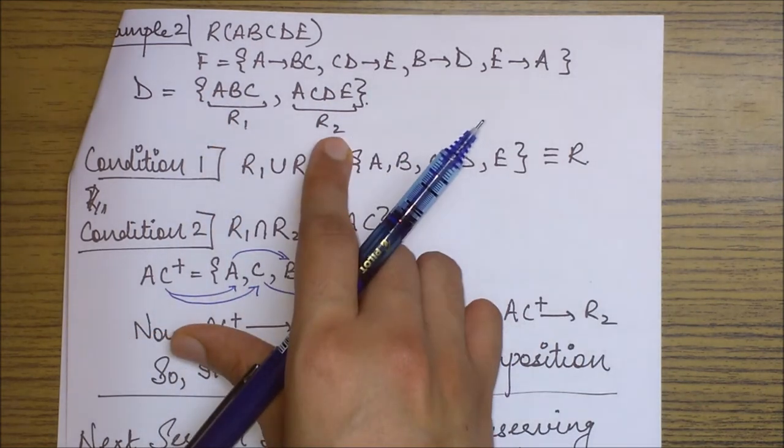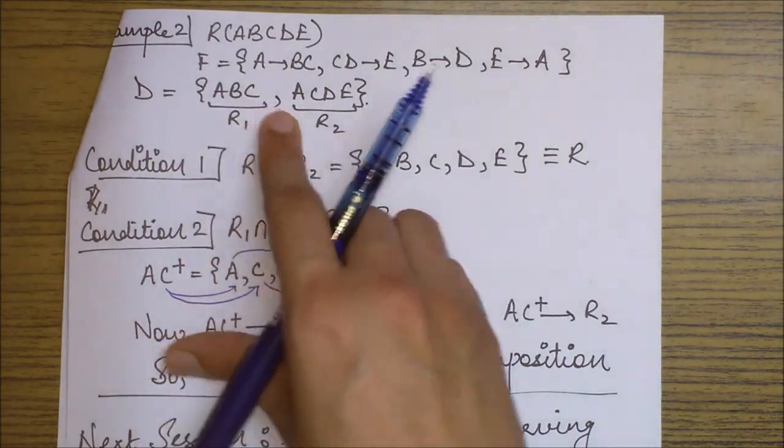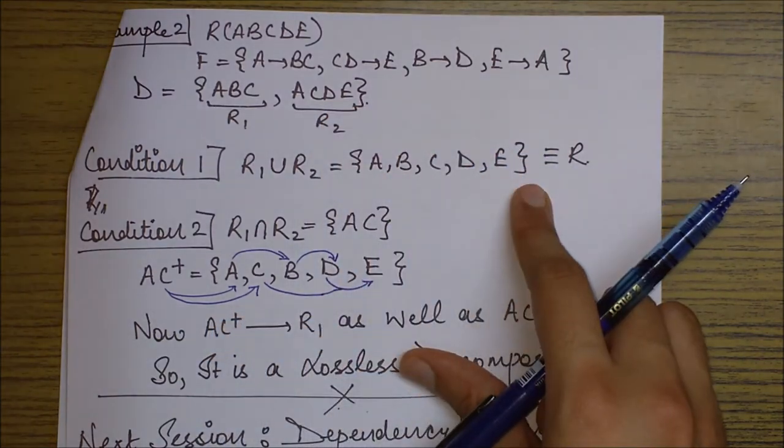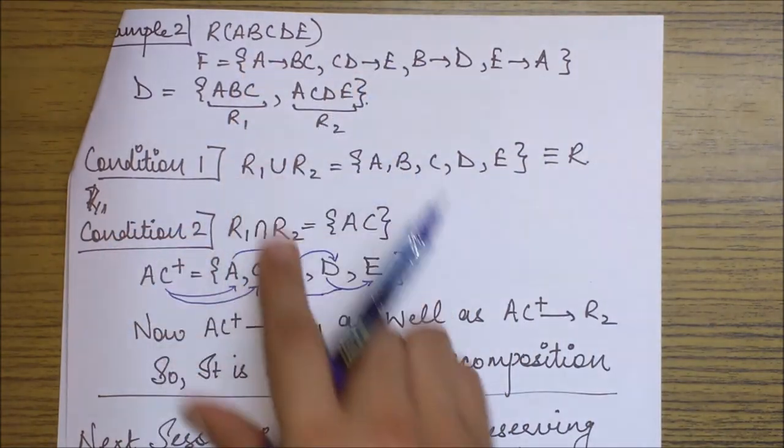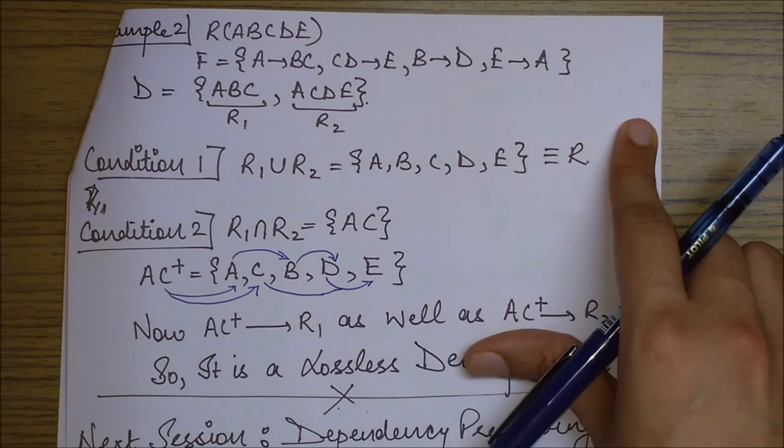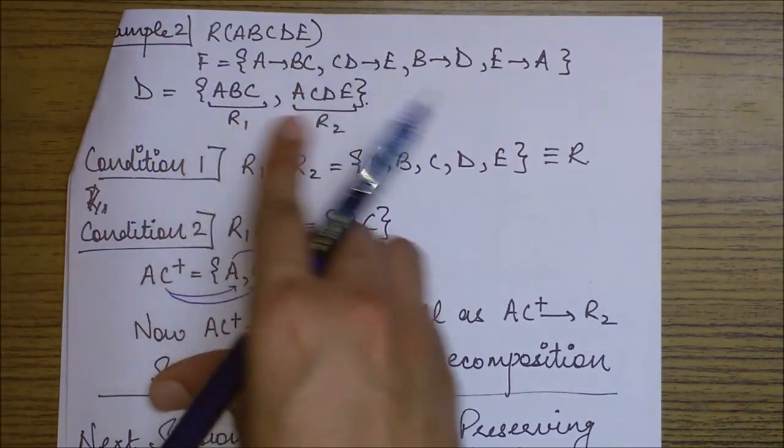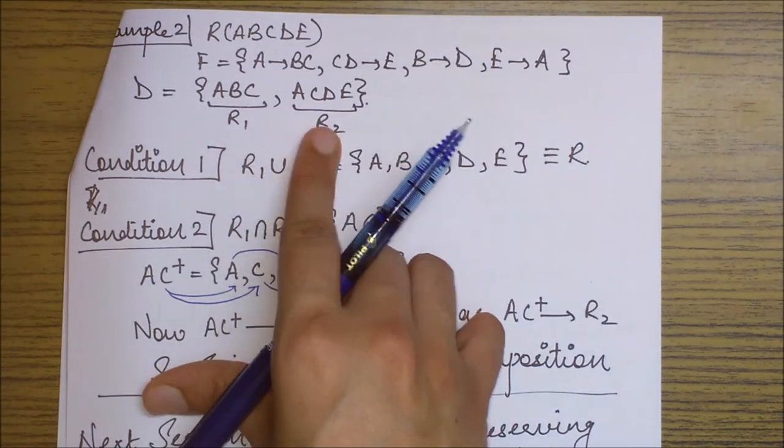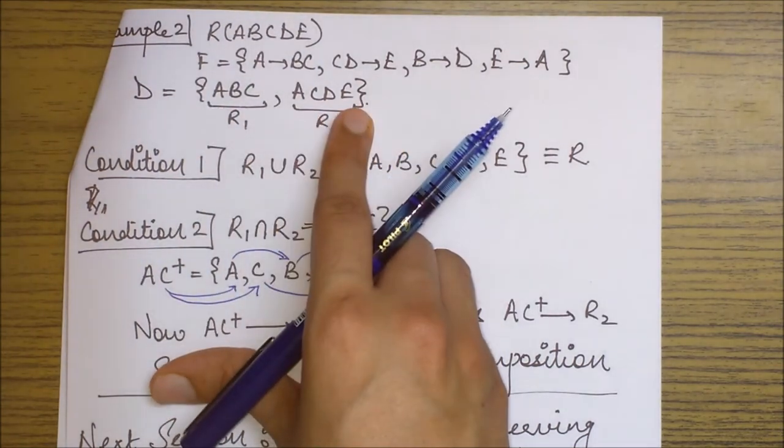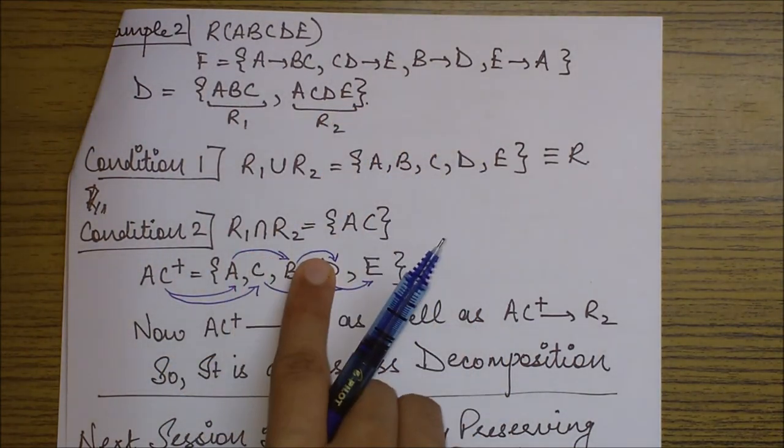Let's see what is R1 union R2. It is ABCDE, which was equals to R. So first condition is satisfied. Next condition, R1 intersection R2 should be either phi. It is not phi. We can see that clearly. A and C are common. So R1 intersection R2 is AC.